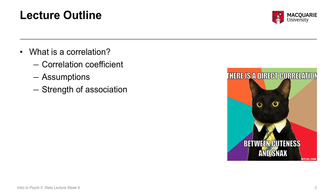We'll also talk about assumptions. Just like with our t-tests, every single statistical test comes with some assumptions that need to be met, so we'll talk about what they are and how we check those — some of them will be familiar to you. Then we'll talk about different kinds of strengths of association, how to tell if there is a strong versus a weak association, and we'll also talk about scatterplots — the particular kind of graph we use to represent what is being tested in a correlational analysis.